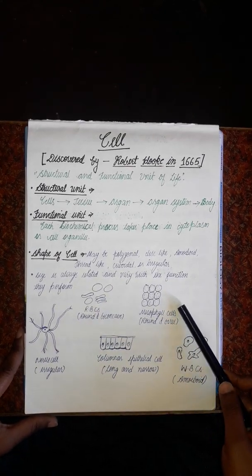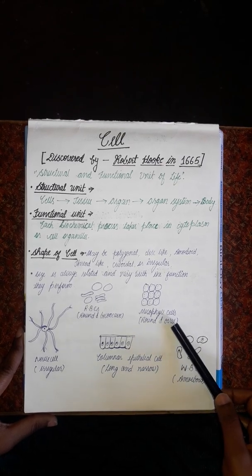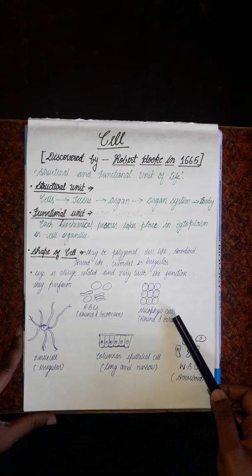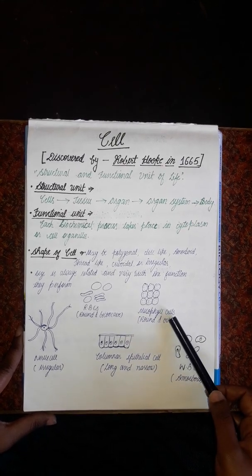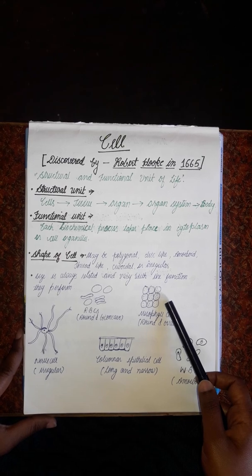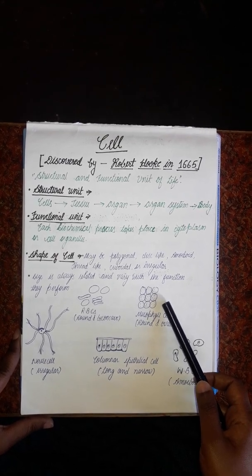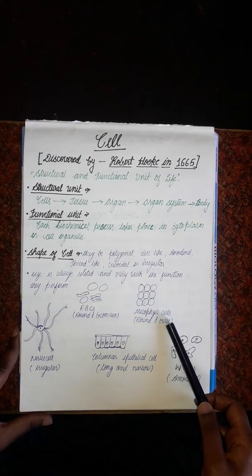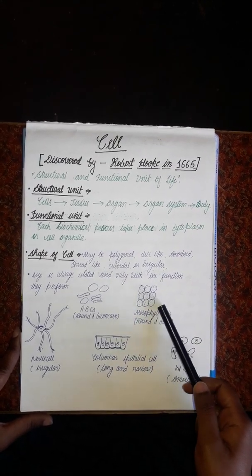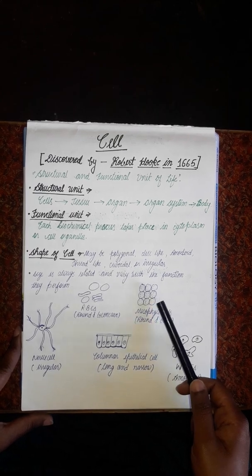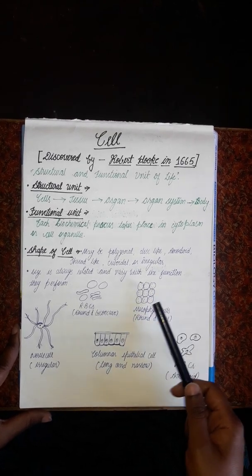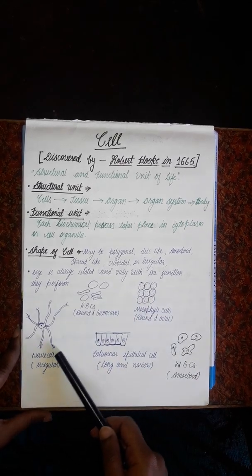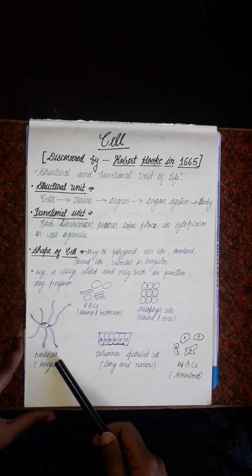The second example is mesophyll cells, which are round and oval in shape. Mesophyll cells are found in the leaves of a plant. Their function is the process of photosynthesis, and for this function they contain a large amount of chlorophyll.